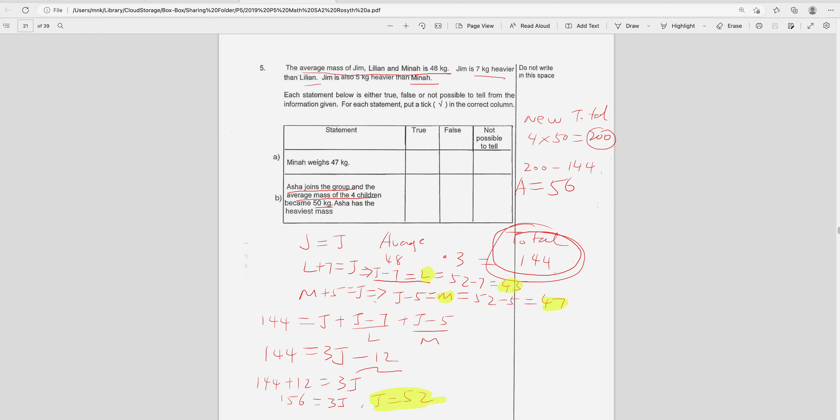So Asha is 56 kg. Use the highlighter to help you compare: 45, 47, 52, Asha 56. Asha has the heaviest weight because 56 is the highest, so it's true.